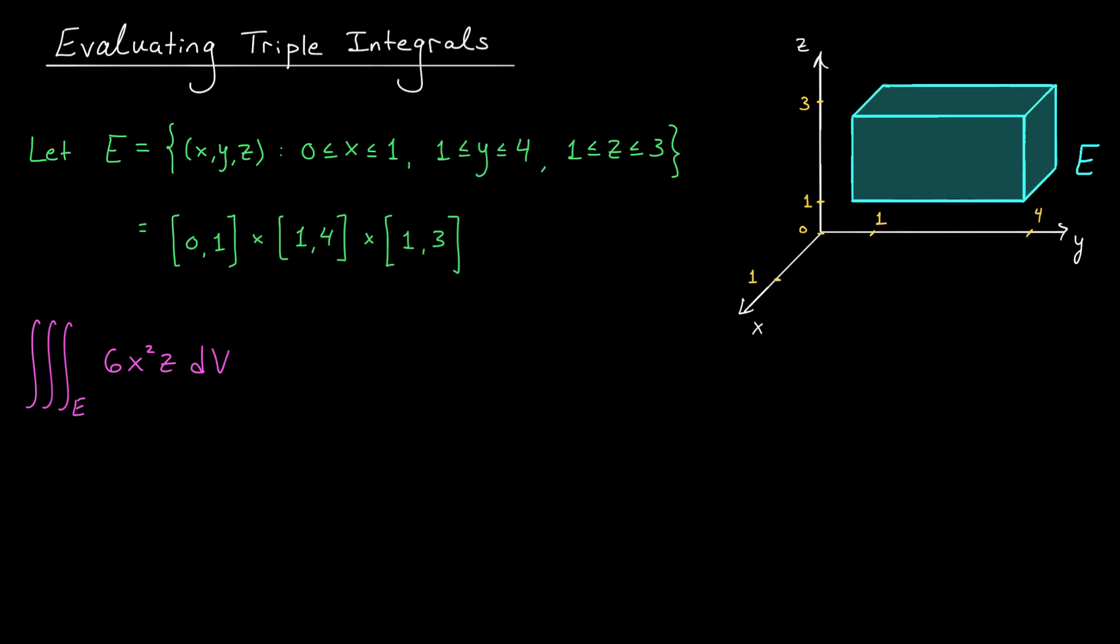Our methods for evaluating triple integrals are essentially the same as those for double integrals. We write the triple integral as three iterated integrals, one with respect to x, one with respect to y, and one with respect to z. If you happen to be in the particularly nice setting where your domain E is a rectangular box, that is, x, y, and z are all bounded between constants, then you can set up those integrals in any order you like, and you can switch the order around freely.